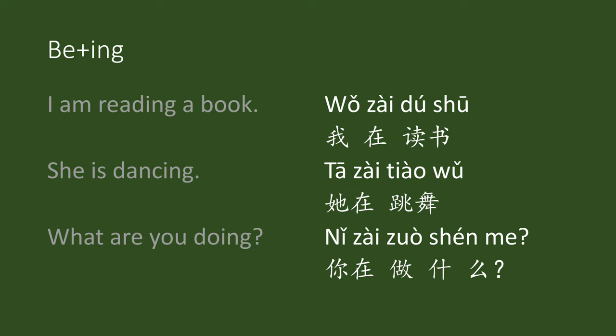zài is a Chinese word with a couple of meanings. zài can mean 'b+ing'. In English, 'b+ing' means present ongoing tense — I am reading a book.